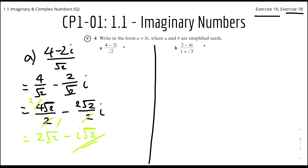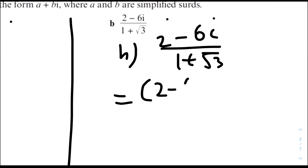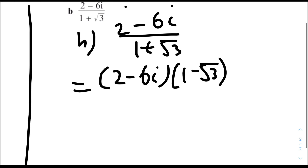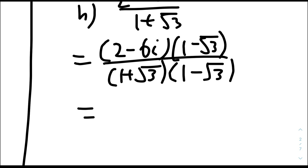For part B, we have (2 minus 6i) over (1 plus root 3). We have to rationalize the denominator by multiplying top and bottom by (1 minus root 3). So the top would be (2 minus 6i) times (1 minus root 3), and the bottom would be (1 plus root 3) times (1 minus root 3). We can expand the top using the FOIL method.